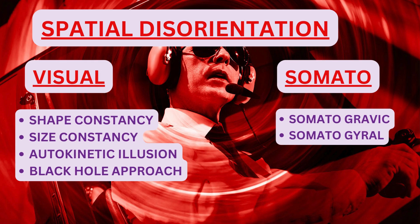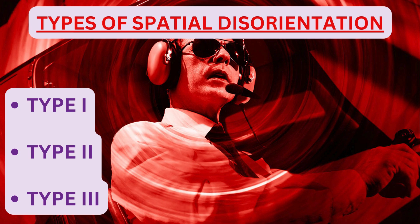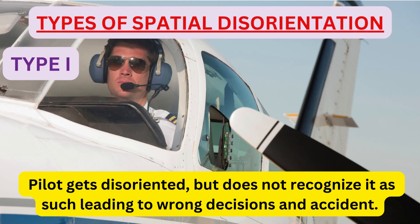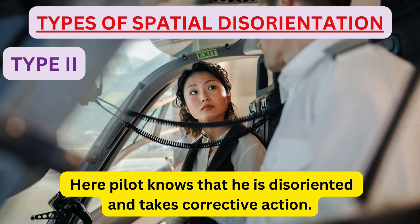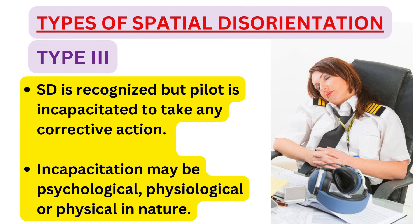Having seen different categories of spatial disorientation, let us discuss the types — or levels — of SD. SD is of three types. Type 1 SD is where the pilot gets disoriented but does not recognize it, leading to wrong decisions and accidents. Type 2 SD is where the pilot knows that he is disoriented and takes corrective action. Type 3 SD is where the spatial disorientation is recognized by the pilot, but the pilot is incapacitated to take any corrective action. This incapacitation may be psychological, physiological, or physical in nature.